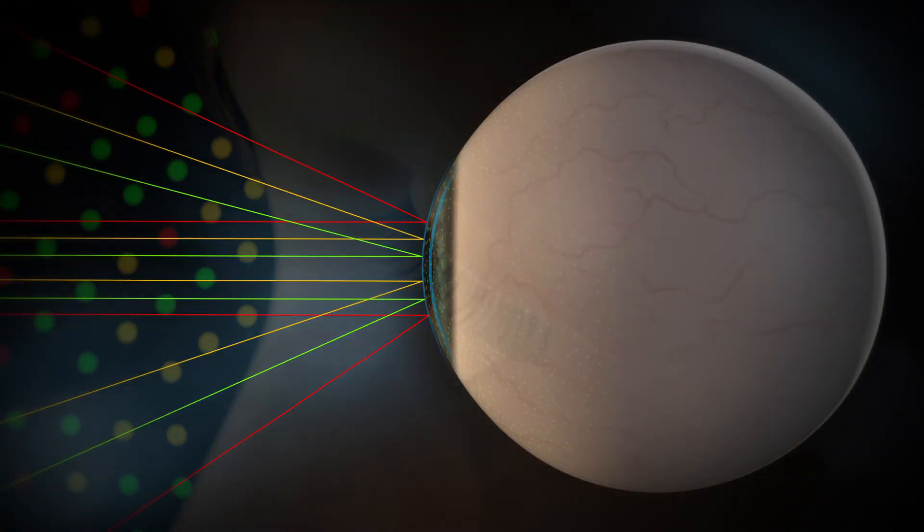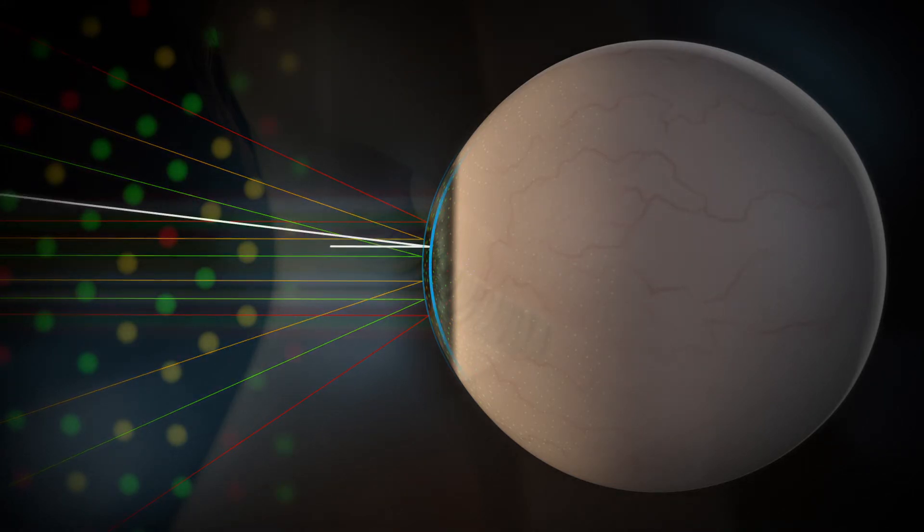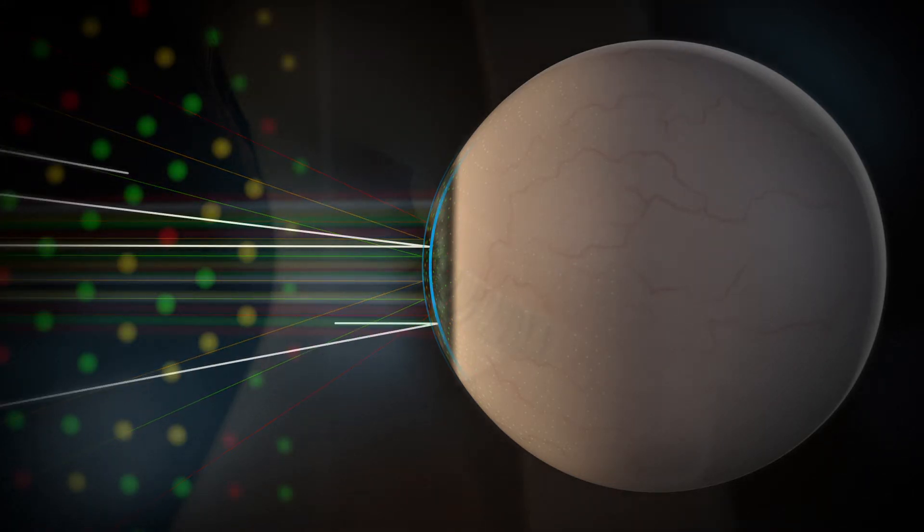The posterior corneal surface is reconstructed by detecting the second Purkinje reflections of the infrared LEDs.